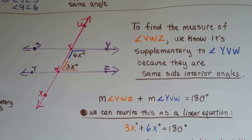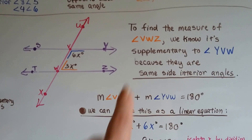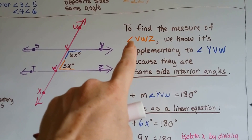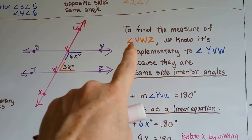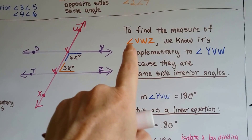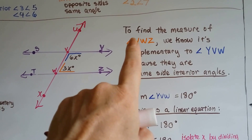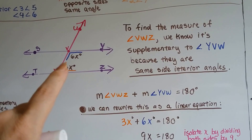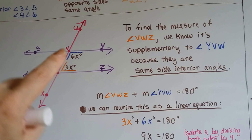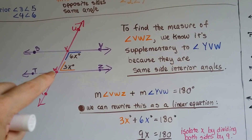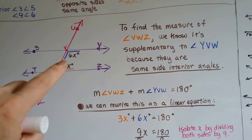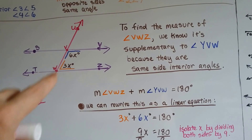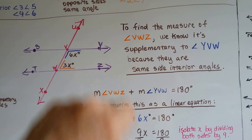If we want to find the measure of angle VWZ — remember, the little symbol means 'angle' — the middle letter is the vertex. So V is here, W is here, and Z is here. This orange angle is VWZ, with W as the vertex.